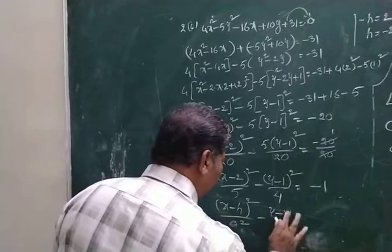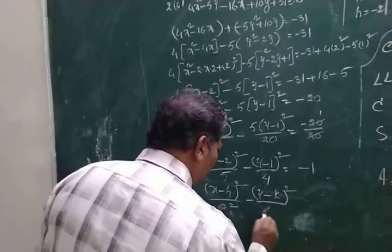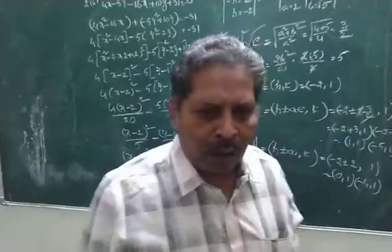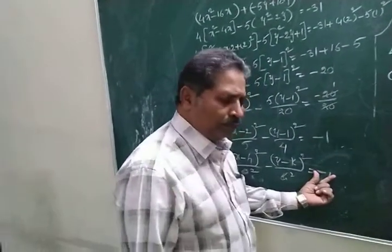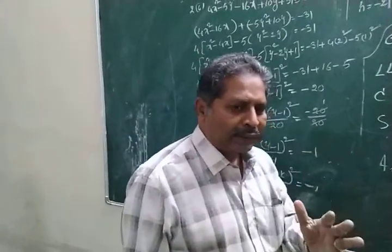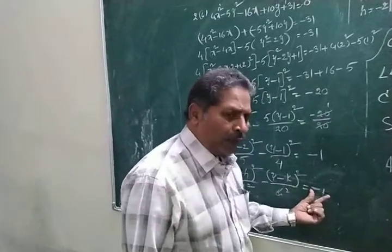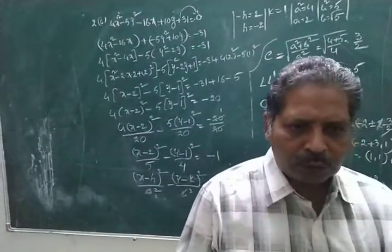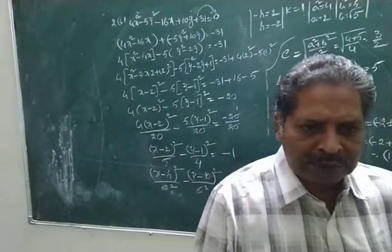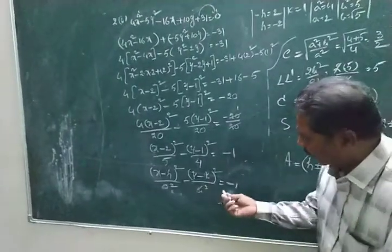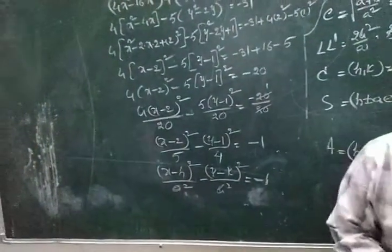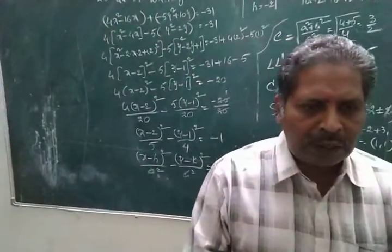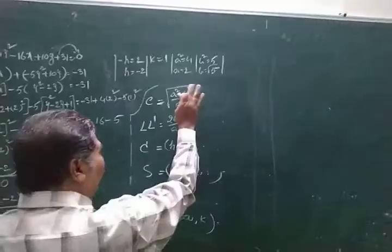The standard form is x minus h whole squared by a squared minus y minus k whole squared by b squared equals negative 1. This is a hyperbola. Since it equals minus 1, this is a different orientation from the previous problem which was plus 1.